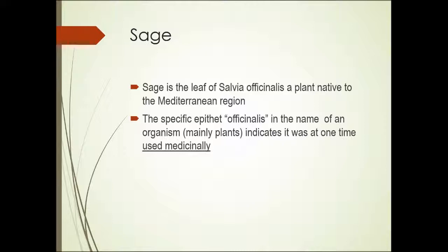Sage is a leaf of a plant called Salvia officinalis, which is native to the Mediterranean region. Remember, the specific epithet 'sativus' meant commonly cultivated; the specific epithet 'officinalis' means that the plant was used medicinally at one time. So when Linnaeus came up with the system of naming organisms and began giving scientific names to plants, if that plant was at that time being used medicinally, the specific epithet officinalis was often given to it.